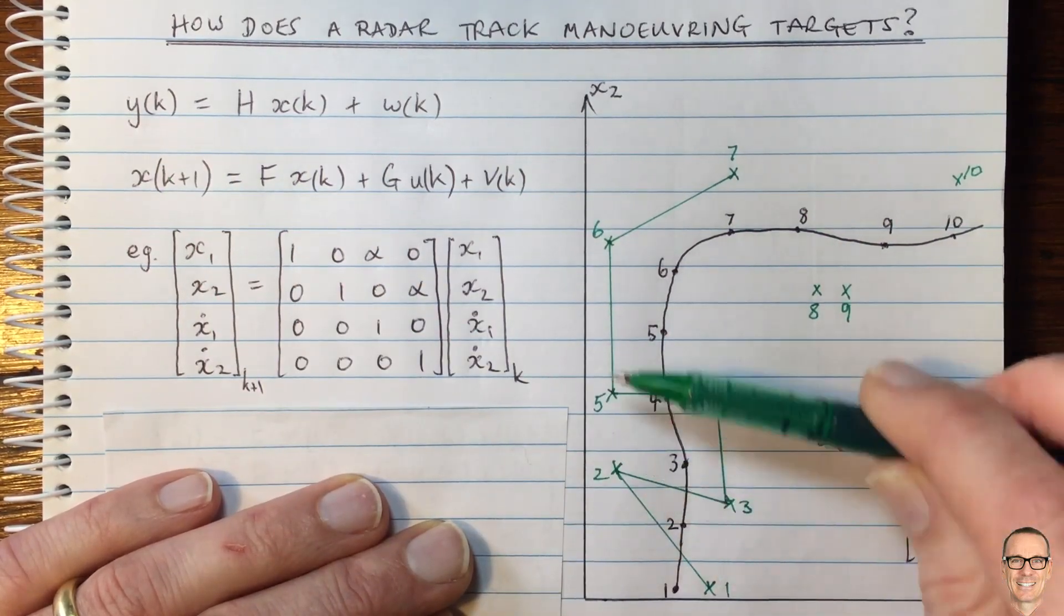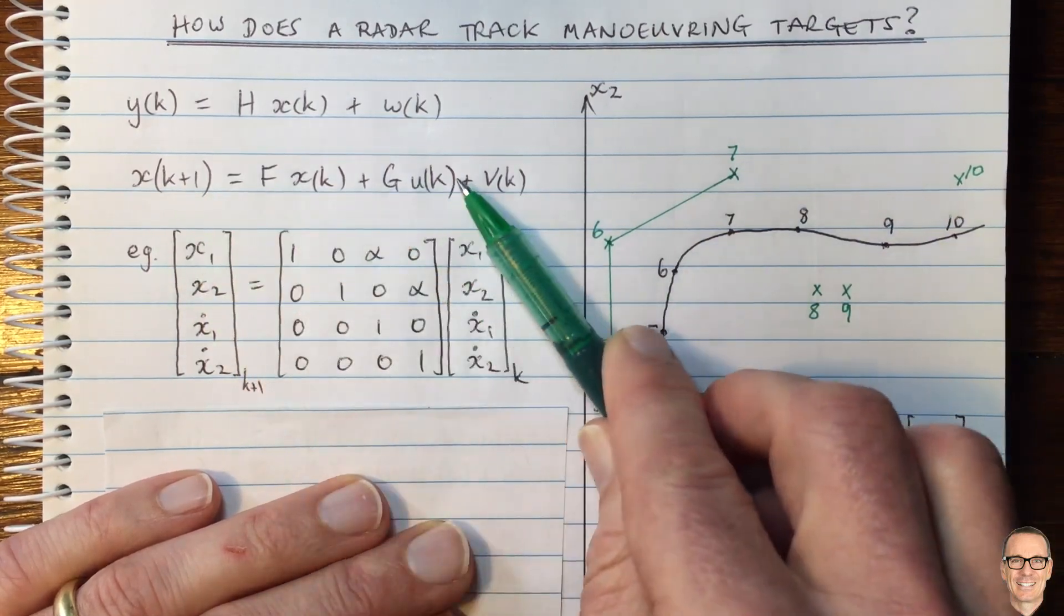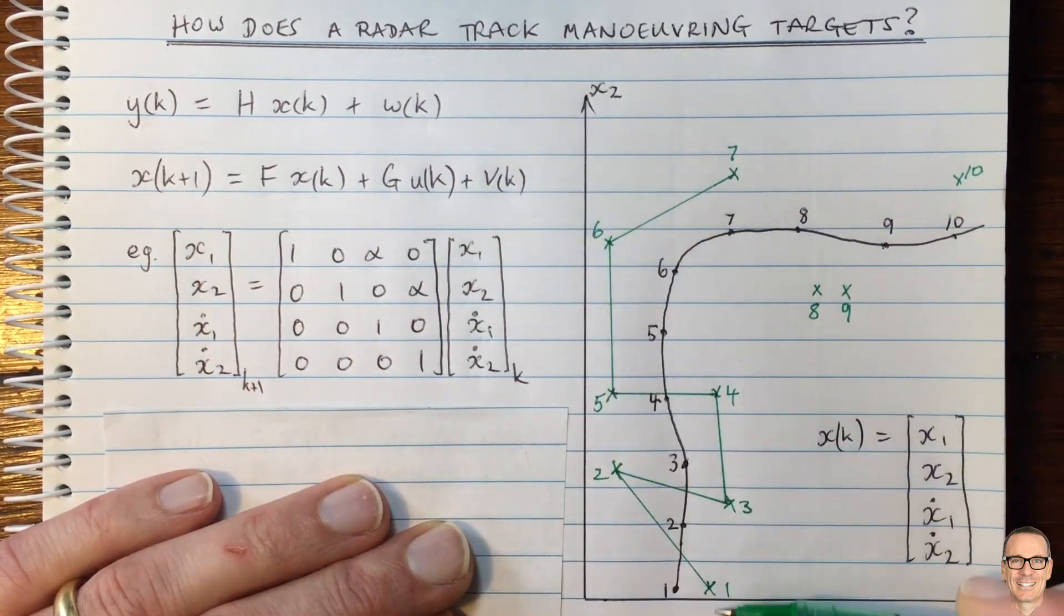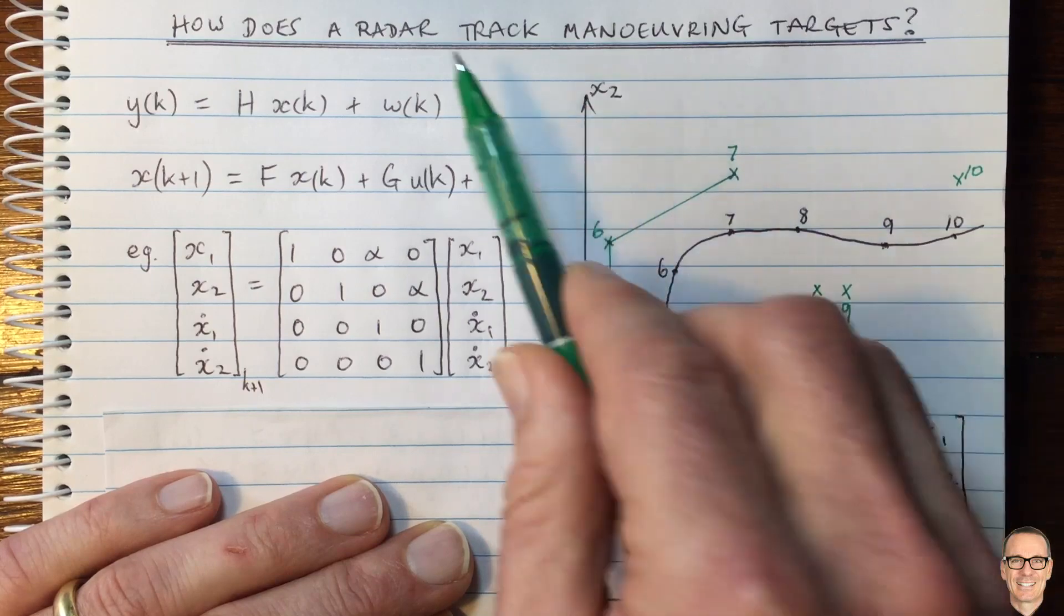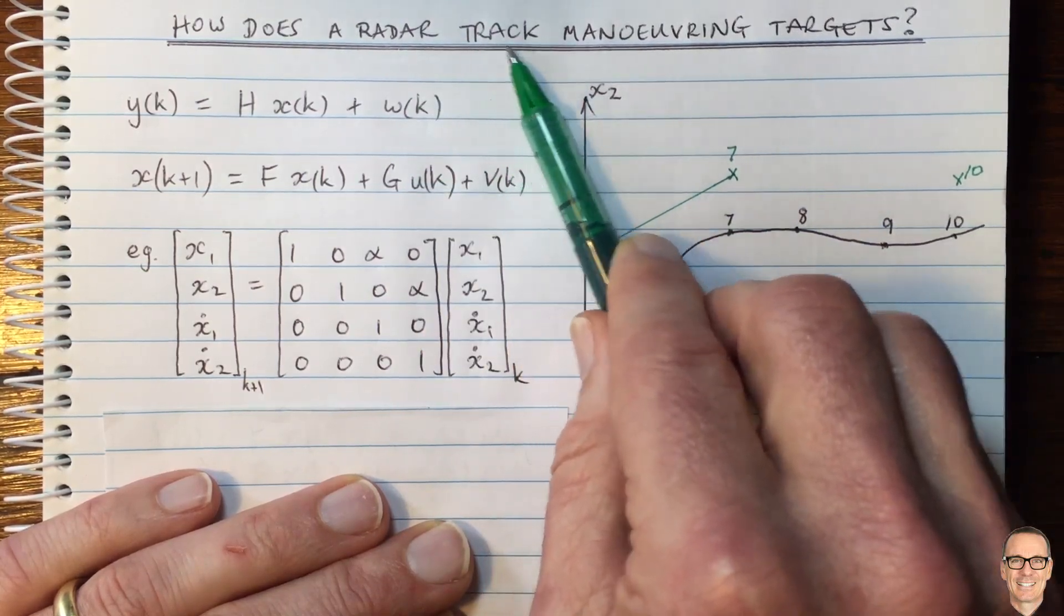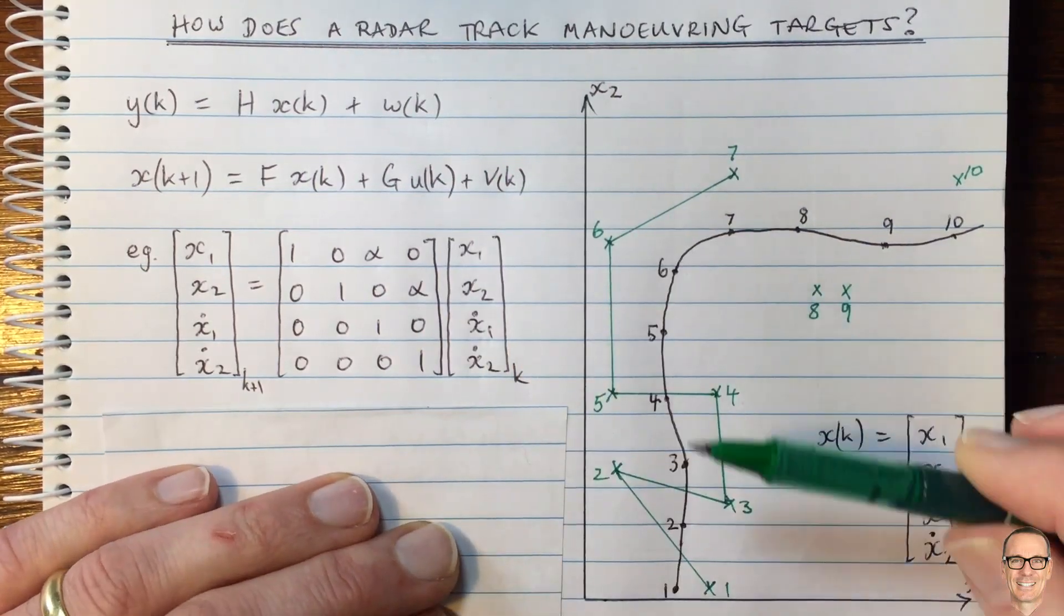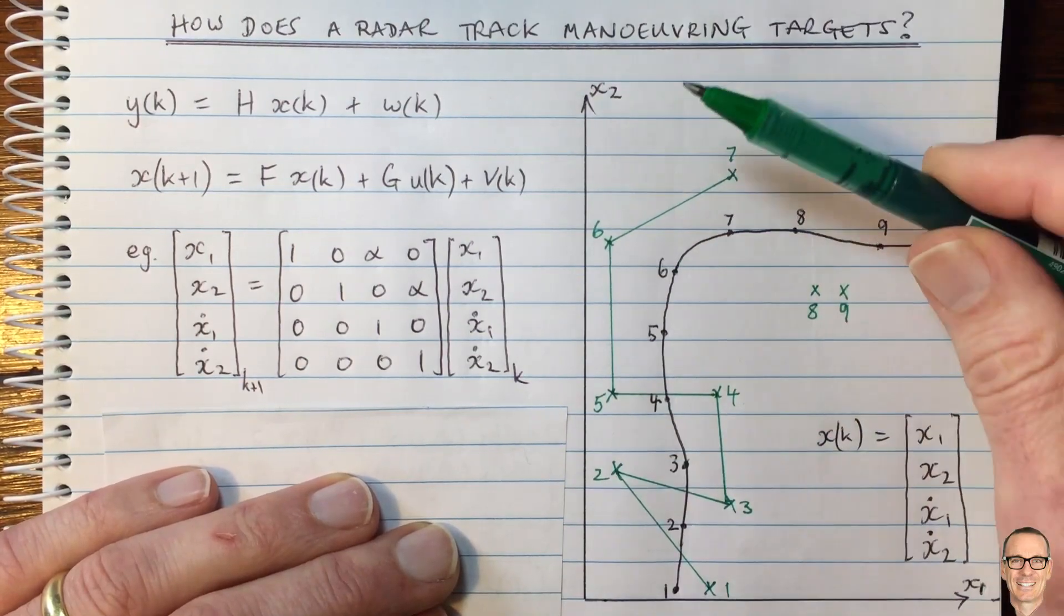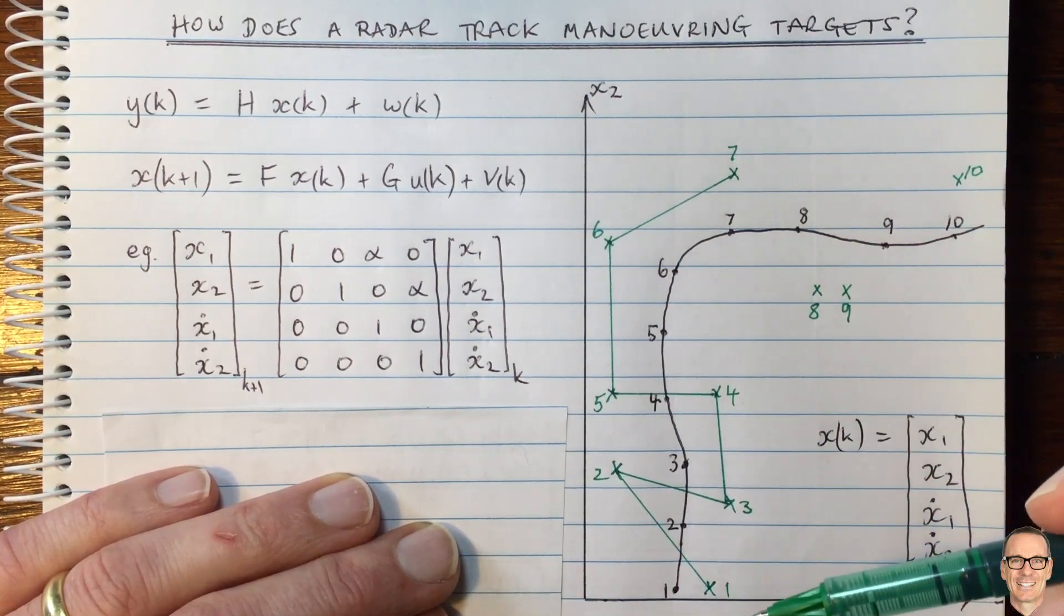Of course, I think you can see that we really do need to use this state space equation and to smooth this out and do some tracking, some smoothing, some filtering. And one way to do that is to use a moving average filter.